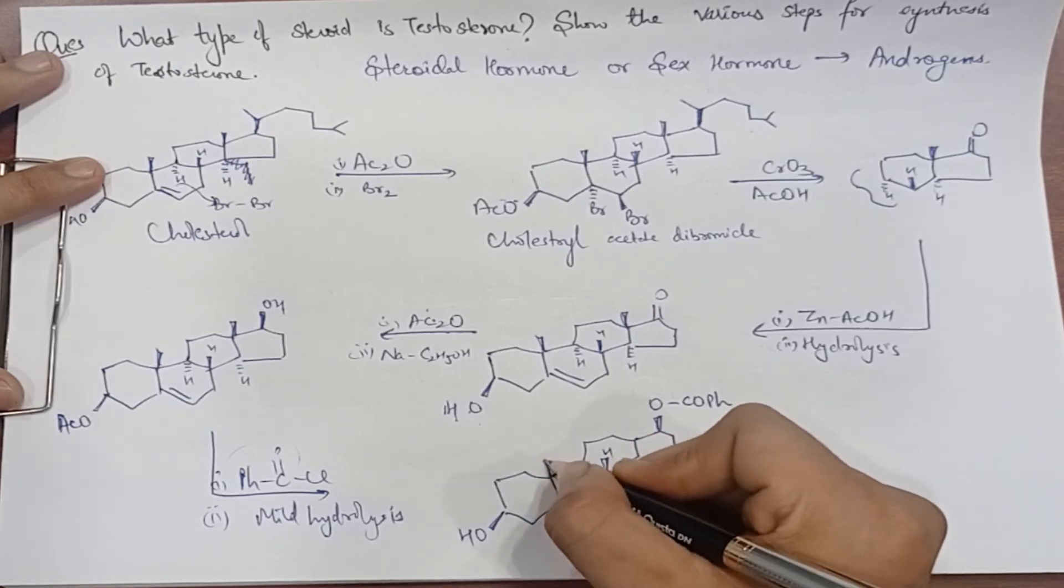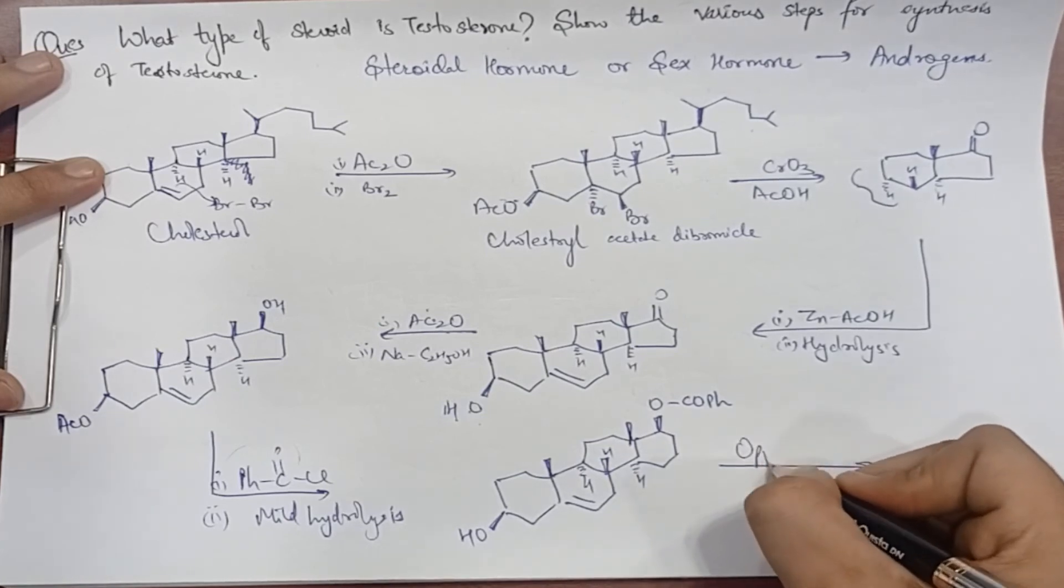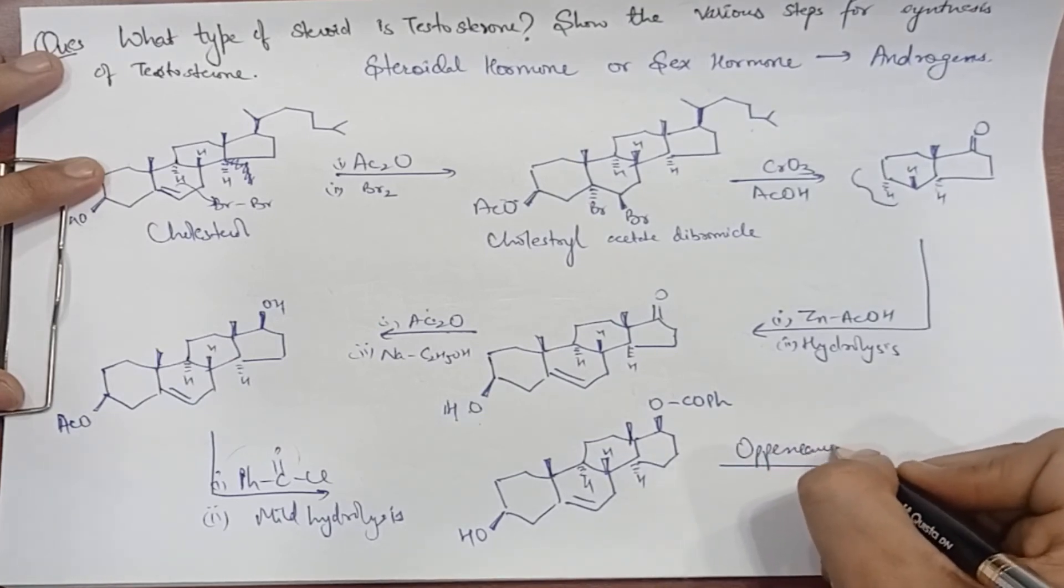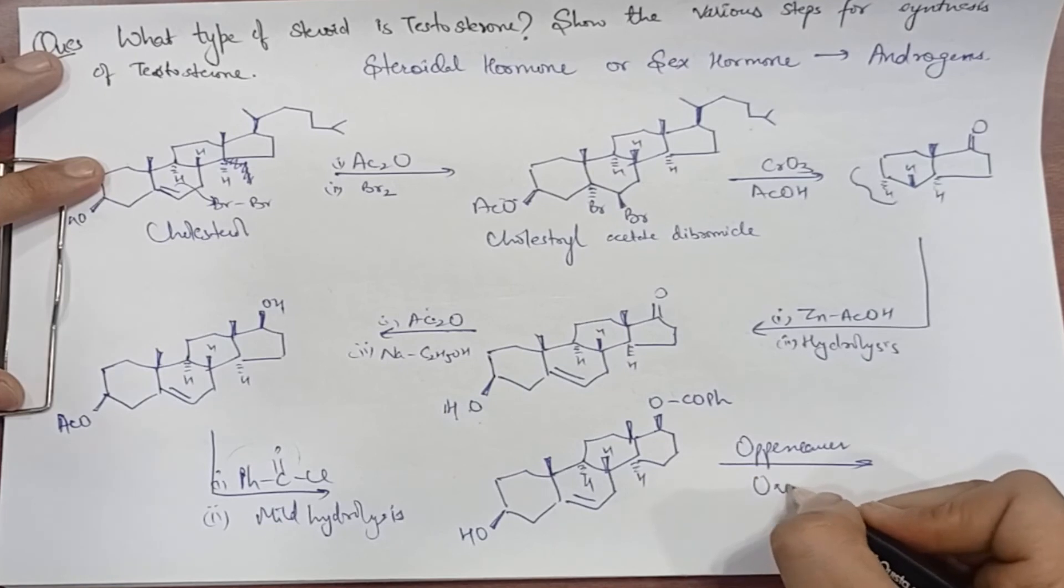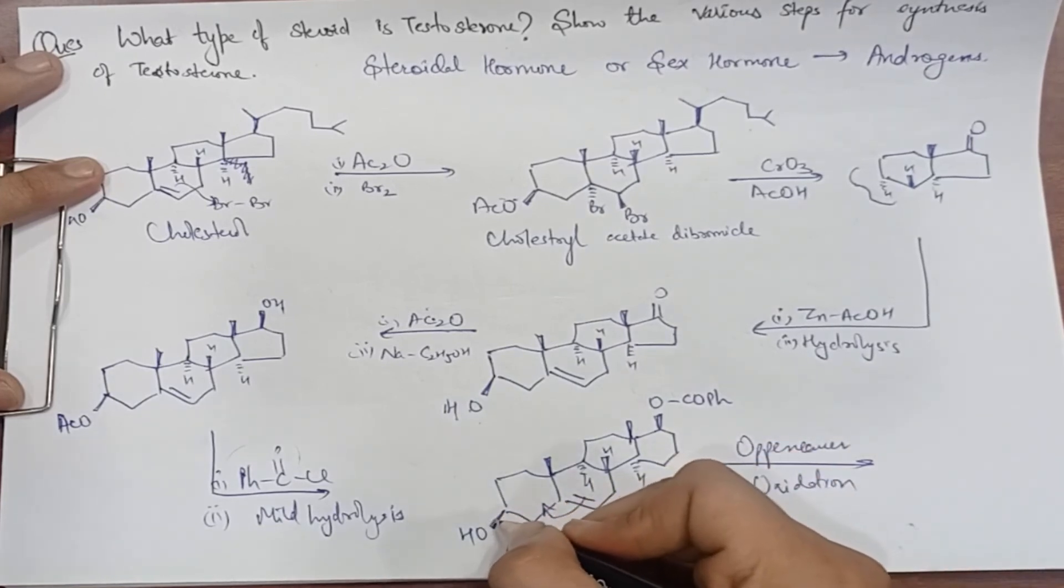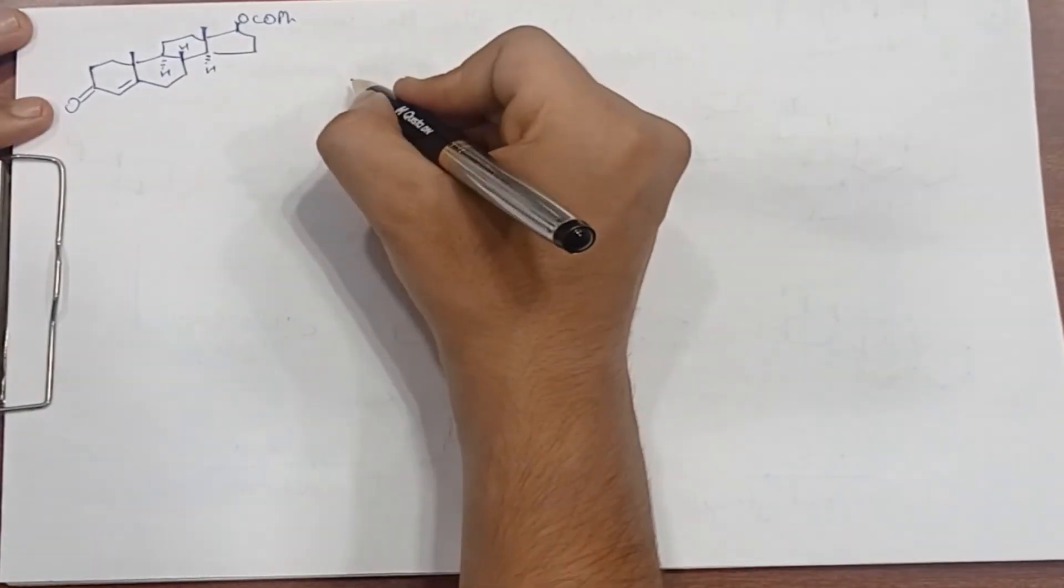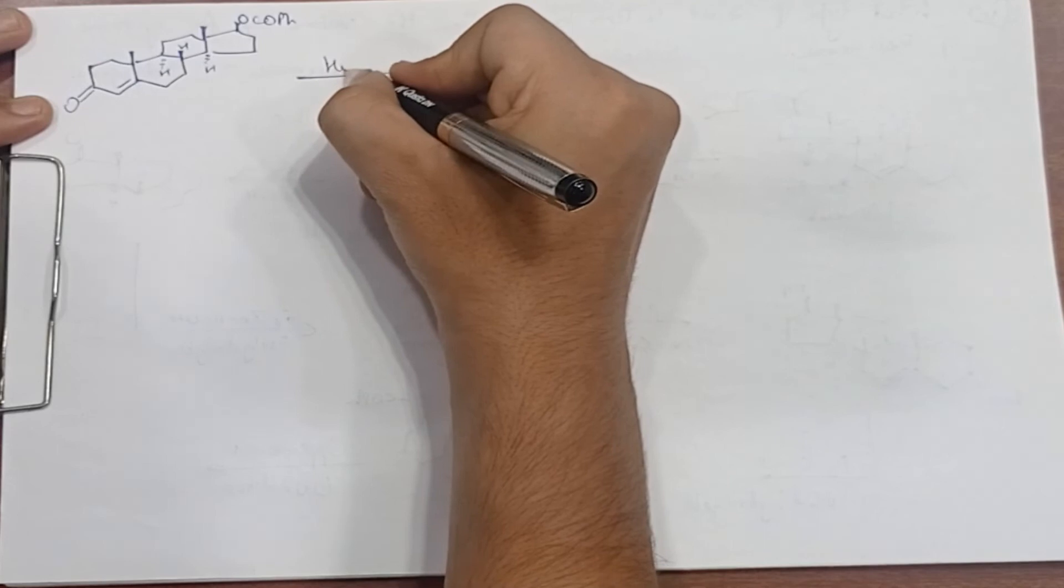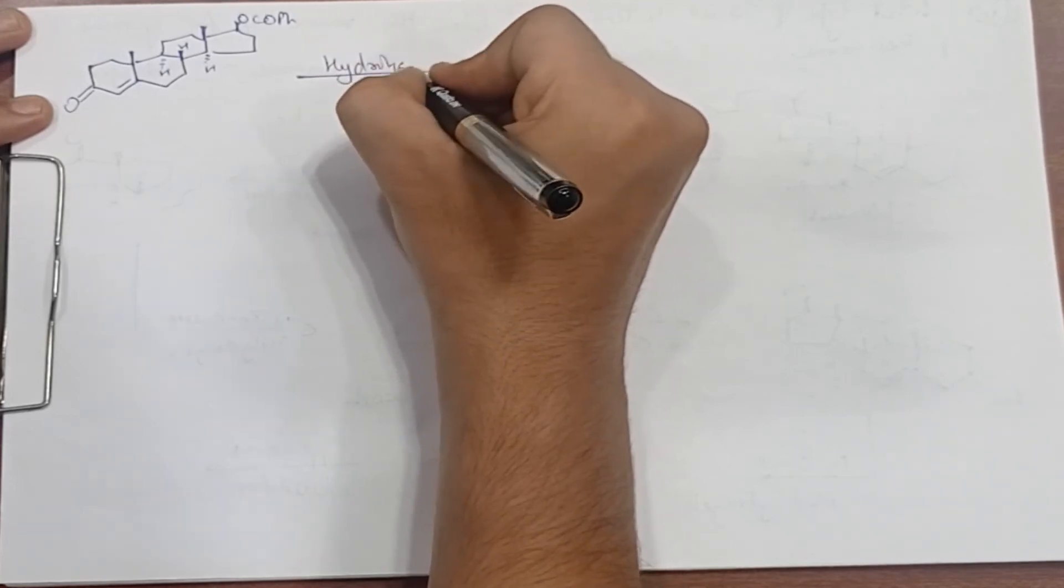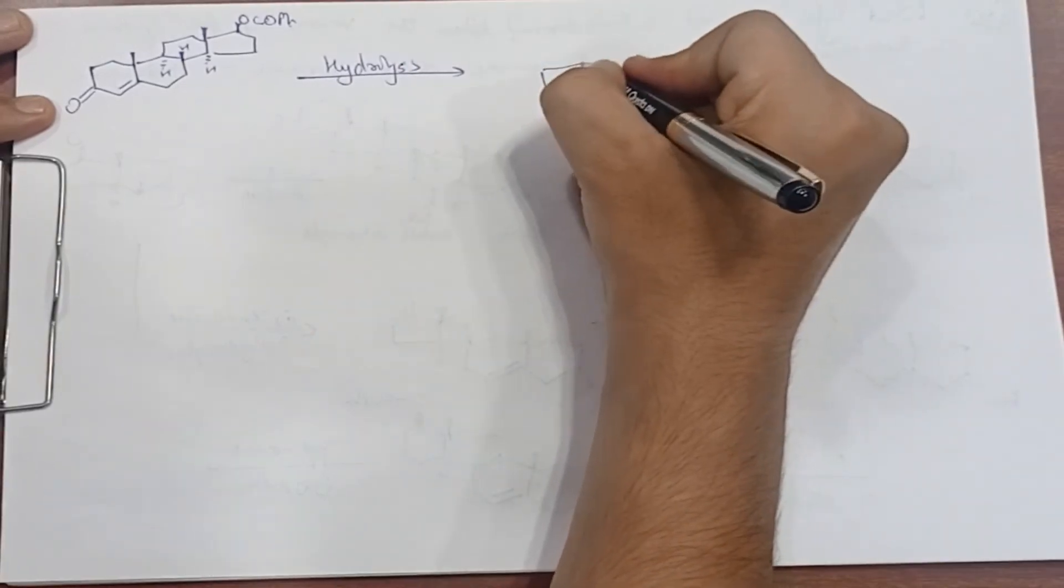Now we do open air oxidation. Open air oxidation: here the double bond shifts and here the OH becomes a double bond O. This is the open air oxidation product. Now what do we have to do? Hydrolysis.